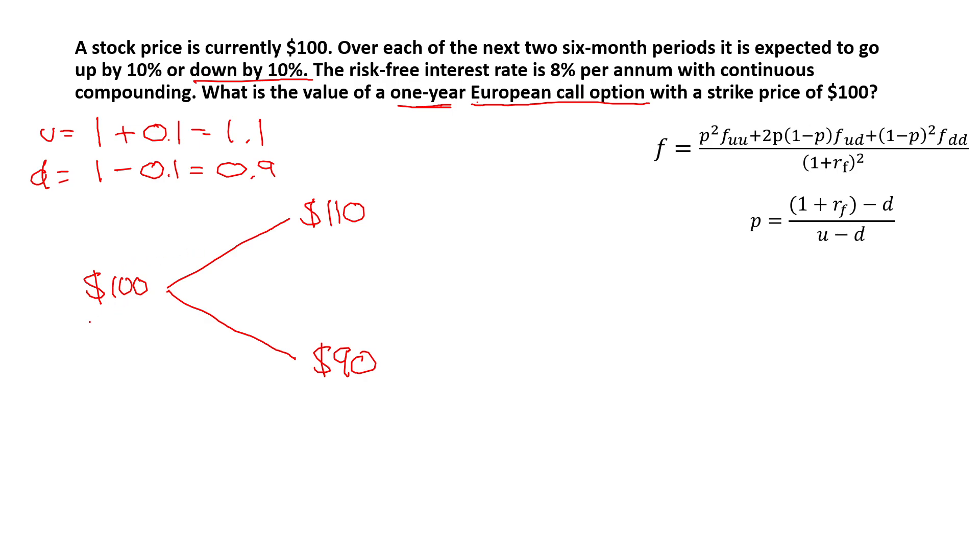Below the share prices, we normally write the call option values. In this case, we know it's F. However, we don't know the value yet. So we just write F equals. Under 110, we have FU. And under 90, we have FD. And because this is a two-step, we have to go up one more time. Up and down.